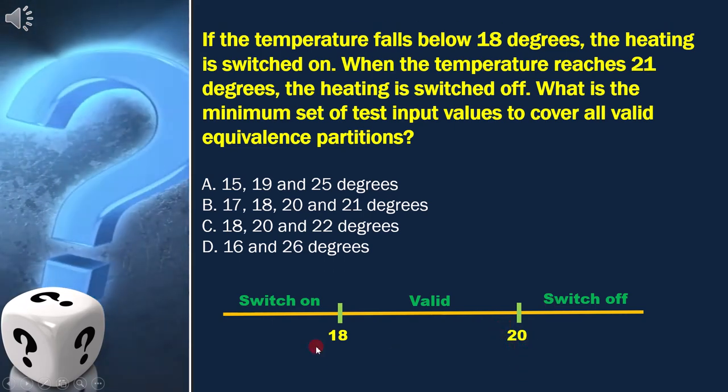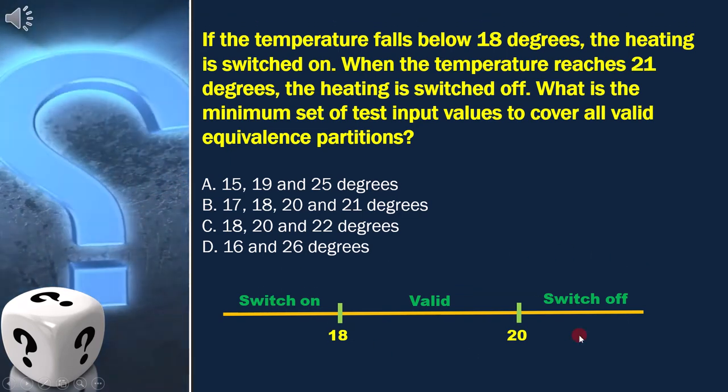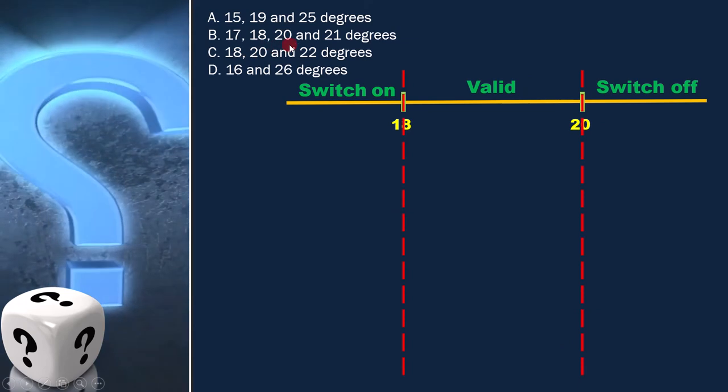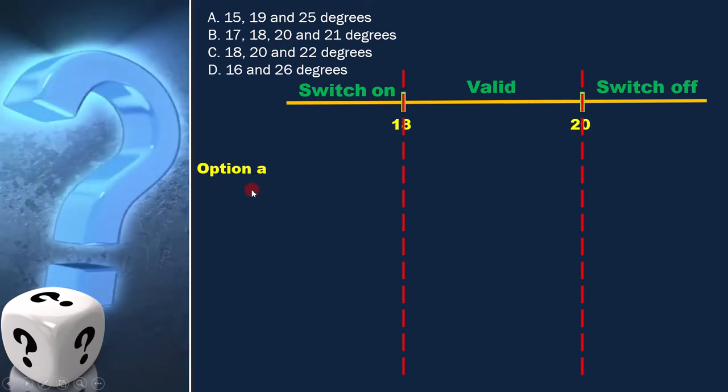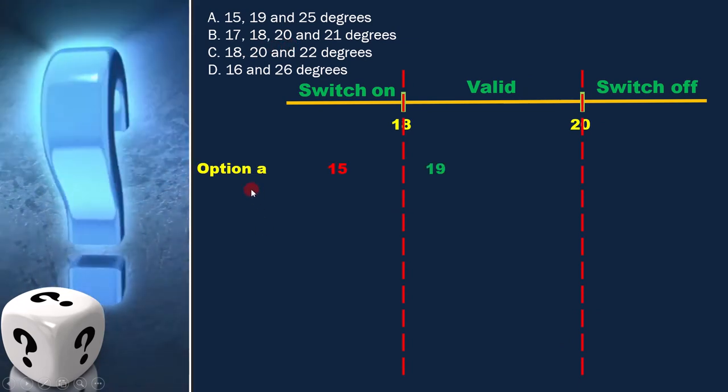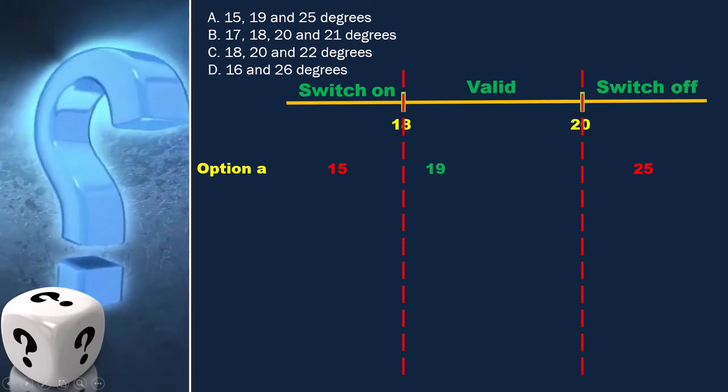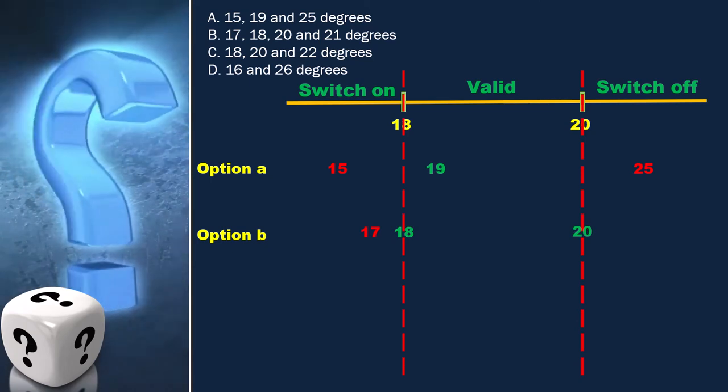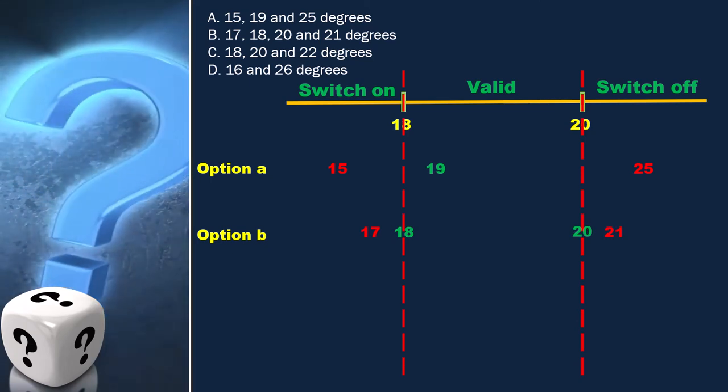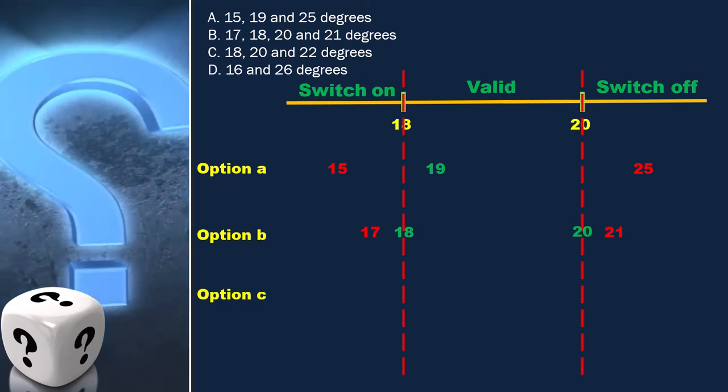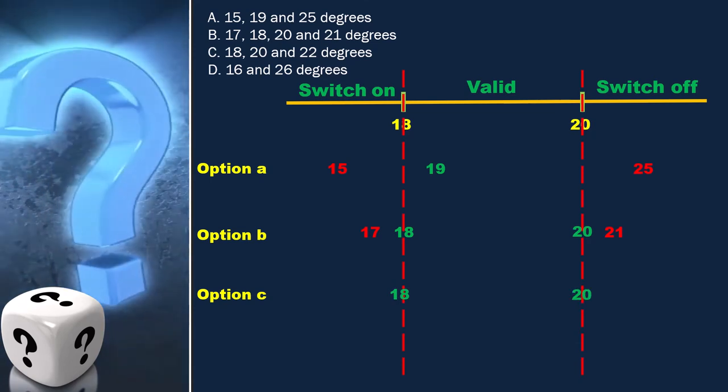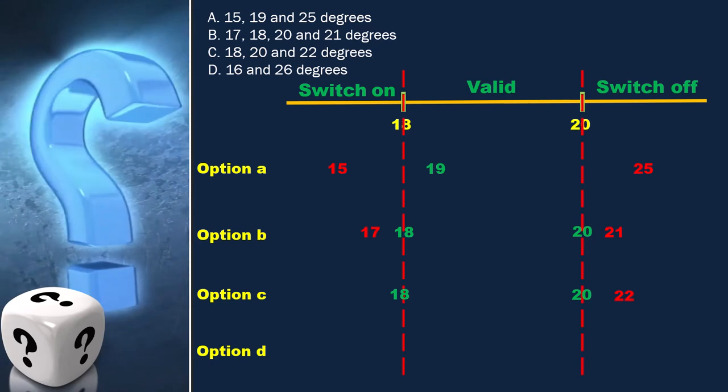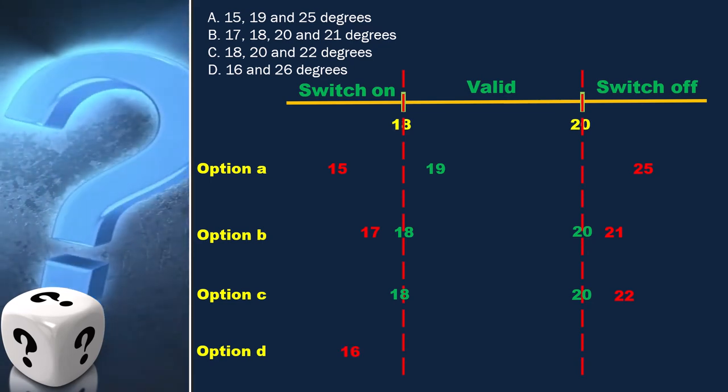With this, the equivalence classes diagram is ready. Now let's analyze the options one by one. Option A is 15, 19, and 25. Option B is 17, 18, 20, and 21. Option C is 18, 20, and 22. Option D is 16 and 26.